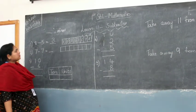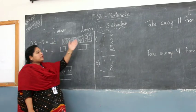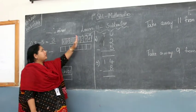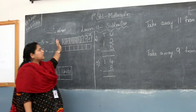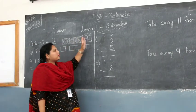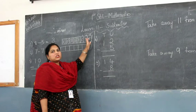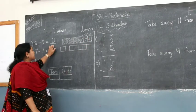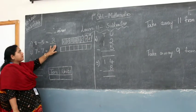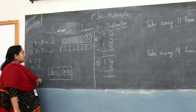Okay children? So we have 8. From 8, we shaded away 5 boxes. The remaining 3 boxes are left unshaded. That is the answer for 8 minus 5, that is 3.